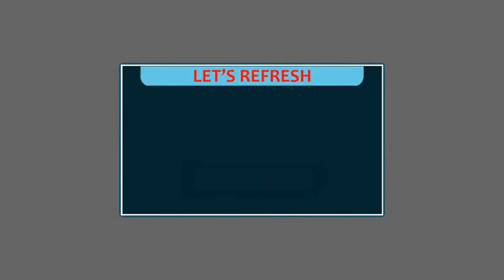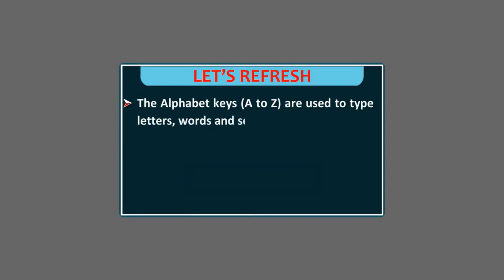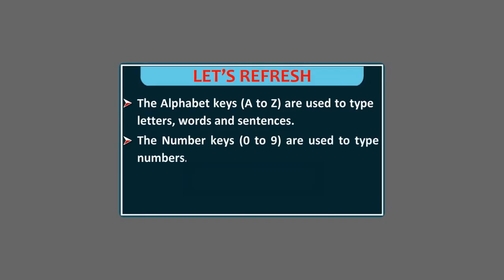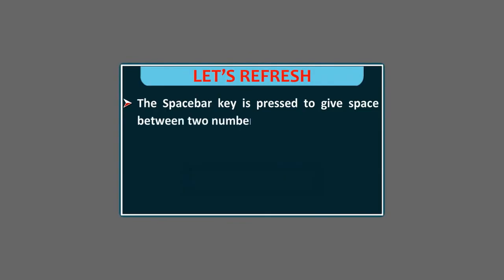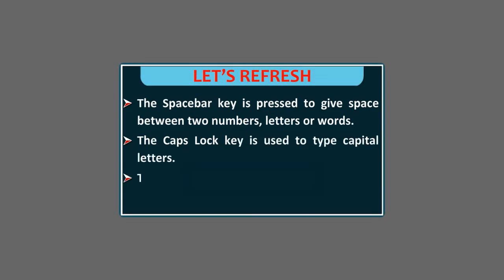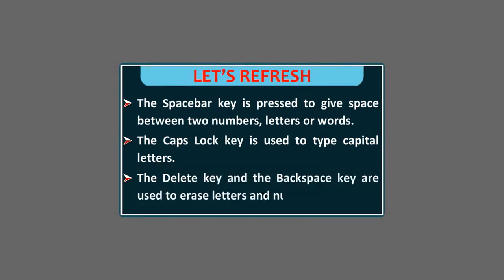Let's refresh. The alphabet keys A to Z are used to type letters, words and sentences. The number keys 0 to 9 are used to type numbers. The enter key is pressed to move to the next line. The spacebar key is pressed to give space between two numbers, letters or words. The caps lock key is used to type capital letters. The delete key and the backspace key are used to erase letters and numbers.